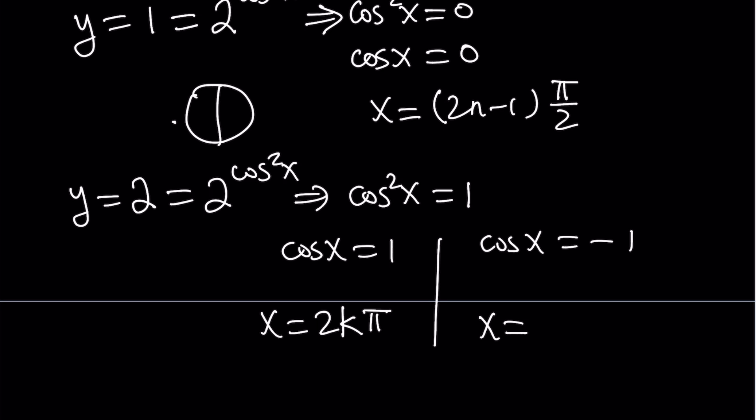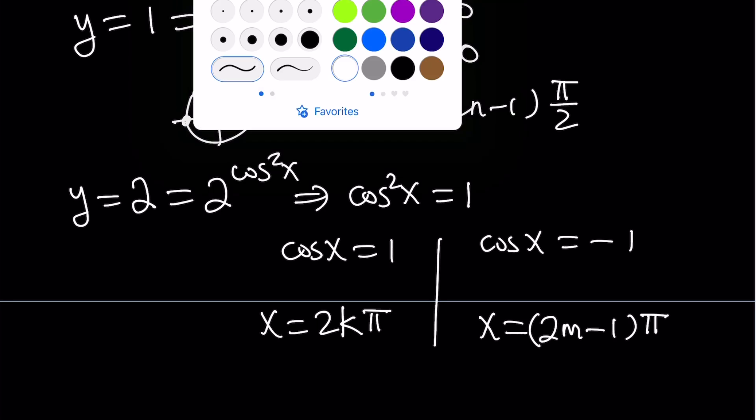For cosine to be negative 1, you're basically dealing with pi. And 2 pi is not going to work. So we're basically dealing with pi, 3 pi, 5 pi. So odd powers of pi is going to work for this equation. So we can write it as 2m minus 1 times pi. I'm trying to be careful using different variables for the integer values because they don't have to be the same.